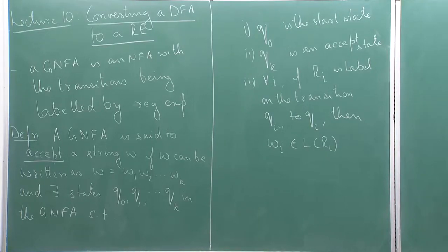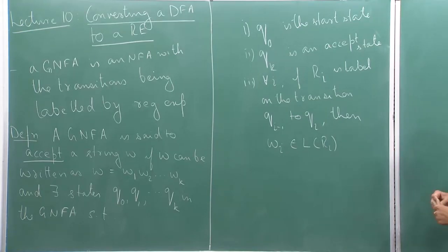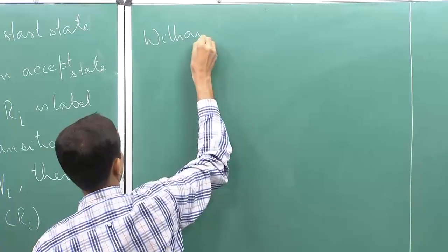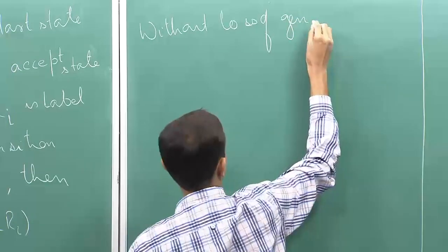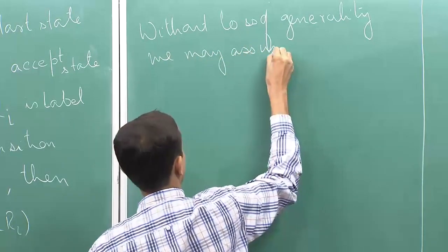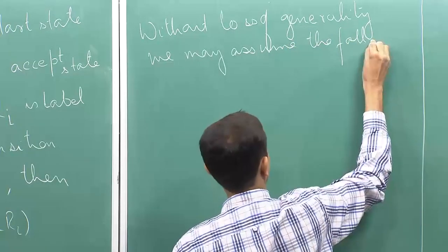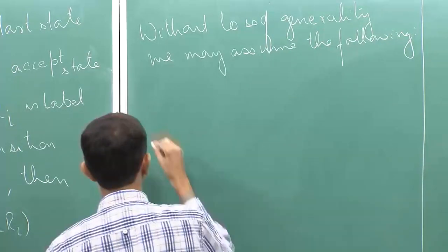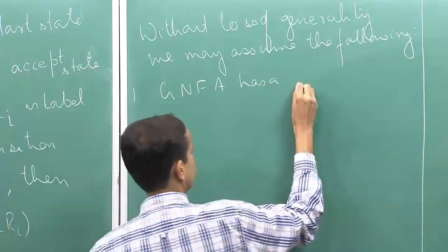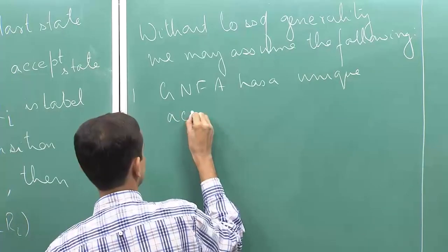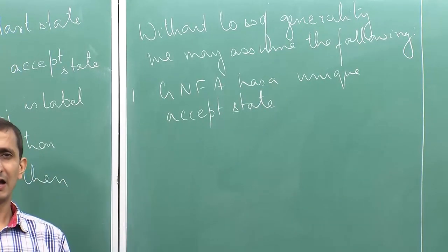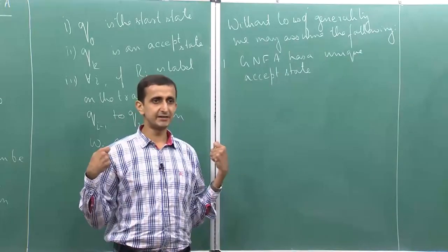Without any loss of generality, we can assume that a GNFA has the following properties. First, we may assume that the GNFA has a unique accept state, because if not — if there are multiple accept states — I can always add epsilon transitions from the old accept states to a new accept state.